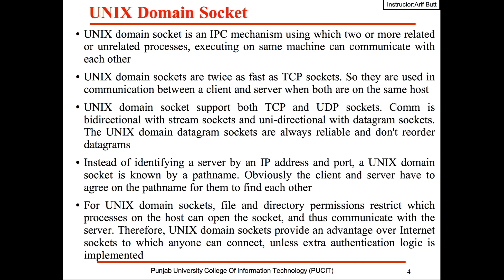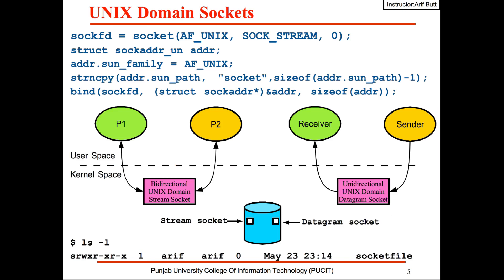Unix domain sockets provide an advantage over internet sockets, to which anyone can connect unless extra authentication logic is implemented. To create a Unix domain socket, as usual we use the socket system call.